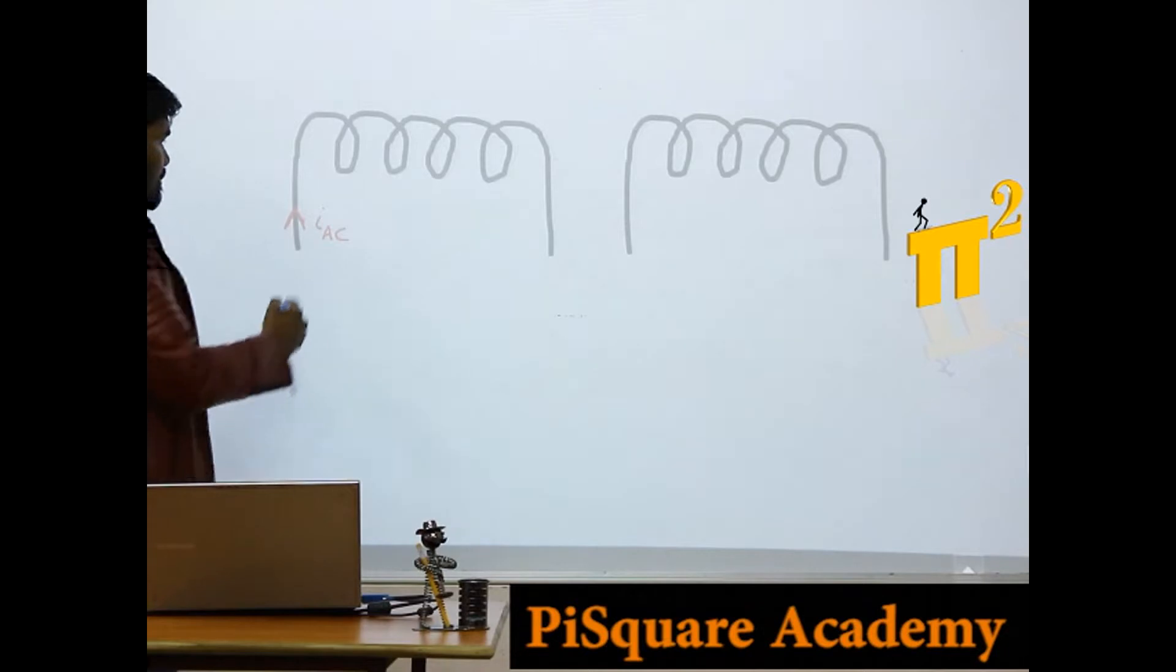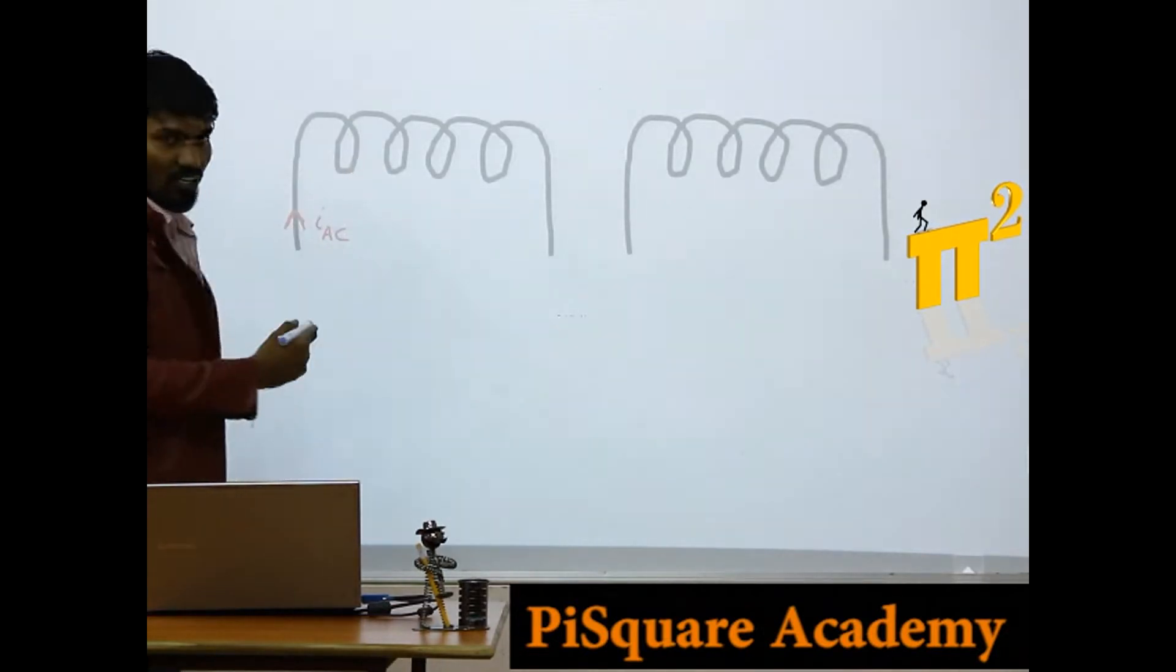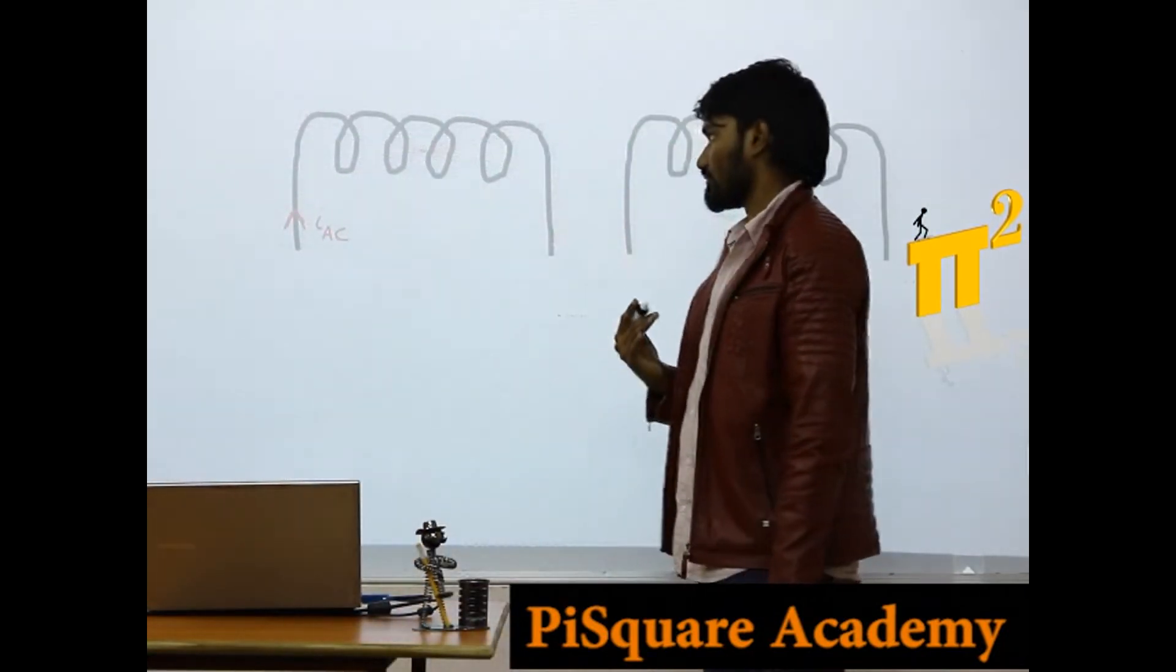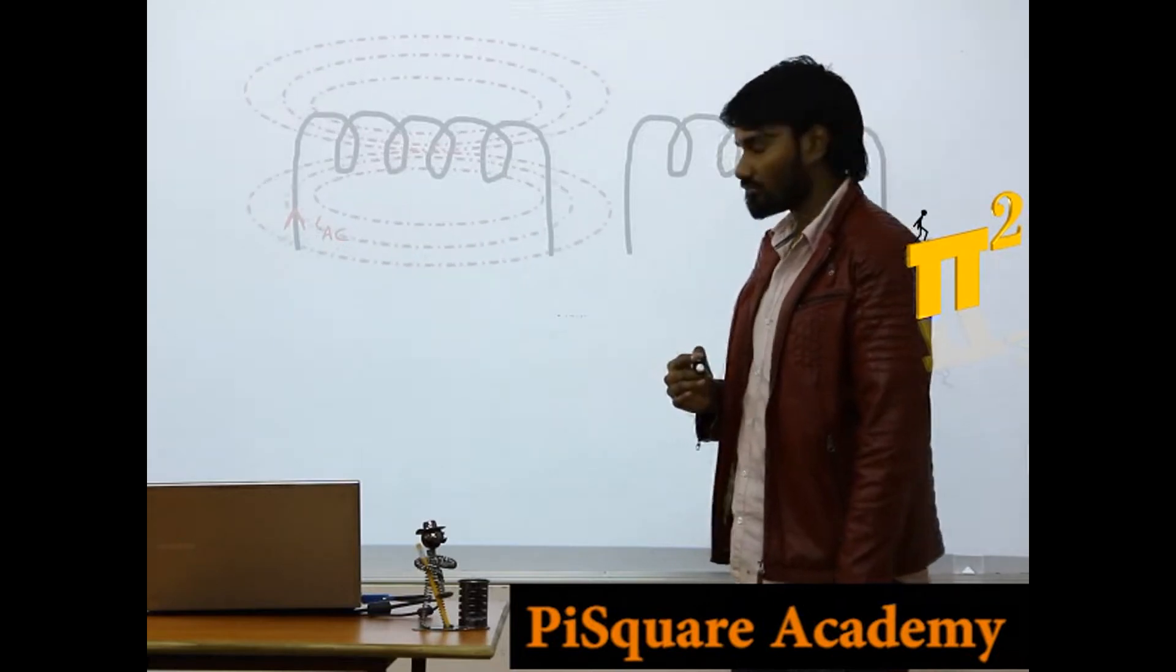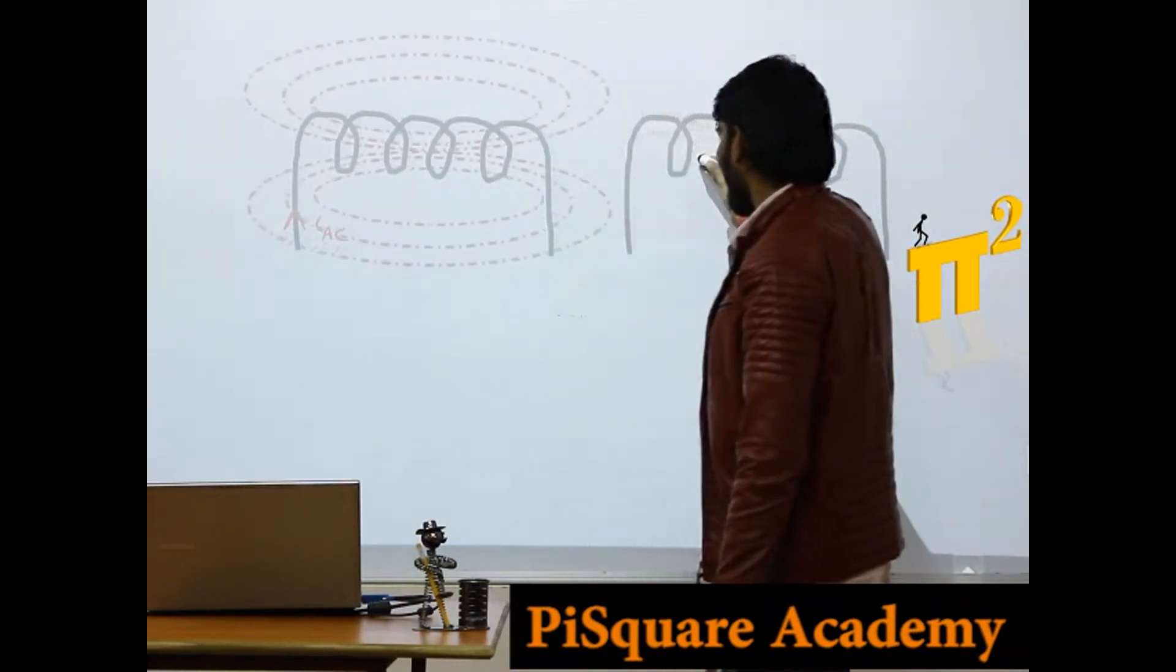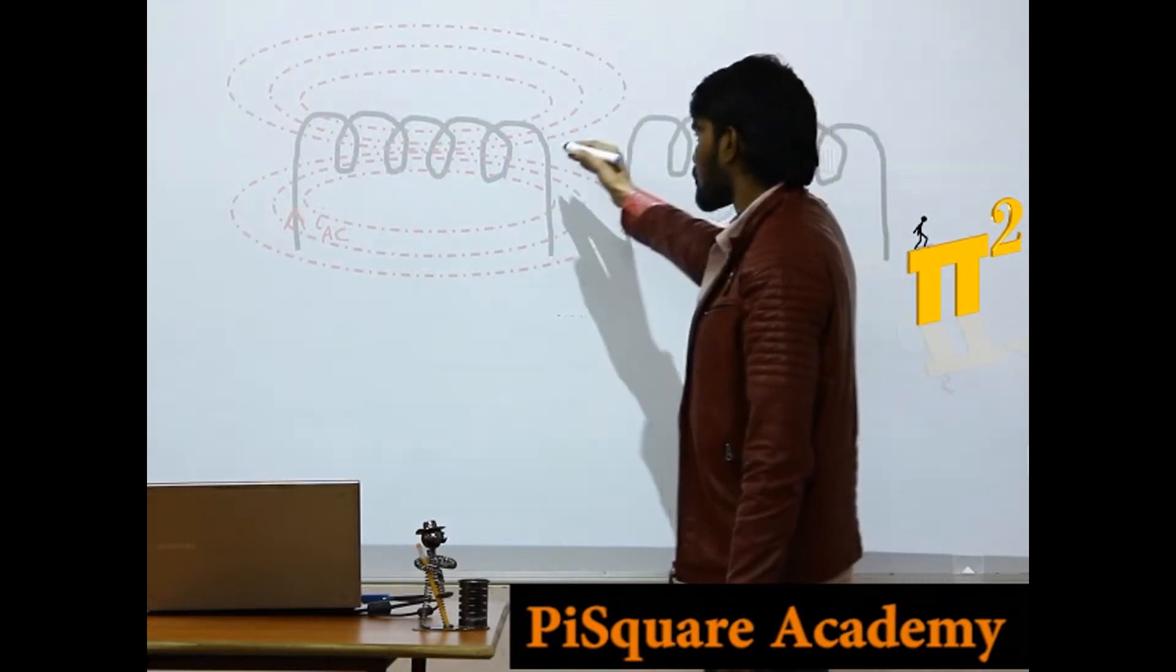Now as I supplied this with some alternating current, the flux which is coming out of this is also alternating. So flux is decreasing, increasing, decreasing, increasing, like this.